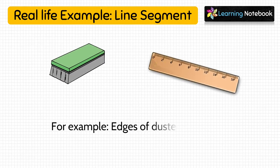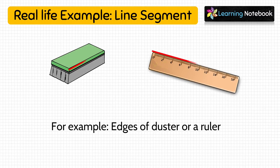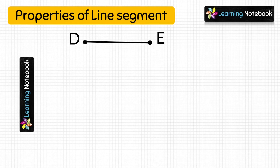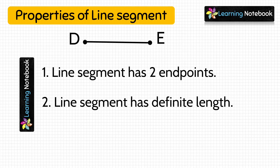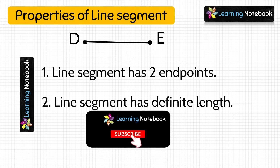Now let's see some real-life examples of line segment. Edges of a duster or edges of a ruler are line segments because they have a definite length. Properties of line segment: it has two end points, and it has a definite length.